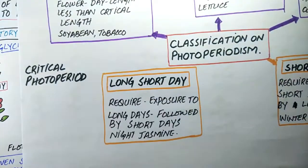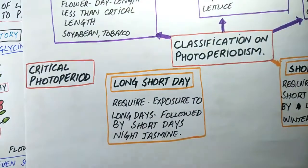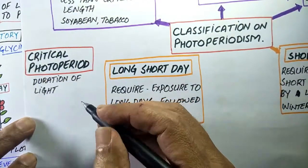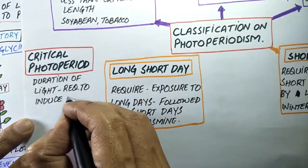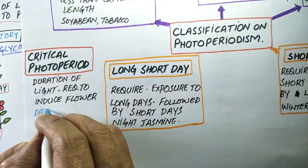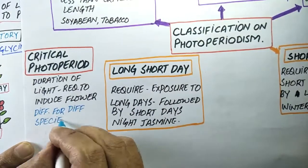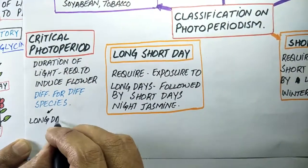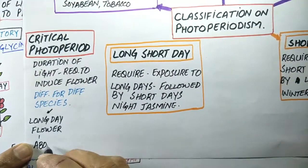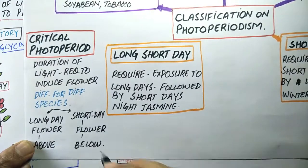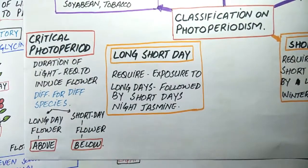What is the critical photoperiod? It is the particular duration of light required to induce flowering. It differs for different species. It is the light duration above which long day plants flower and below which short day plants flower.